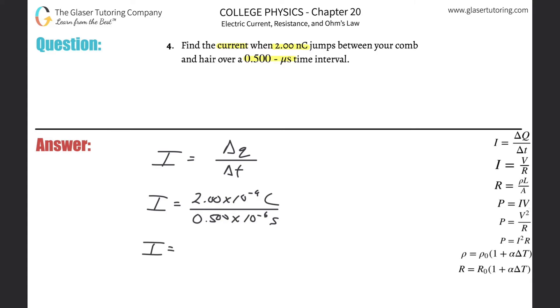And literally all you got to do now is just plug it on in. So two times 10 to the minus ninth—oops, what am I doing?—two times 10 to the minus ninth divided by 0.5 times 10 to the minus six.